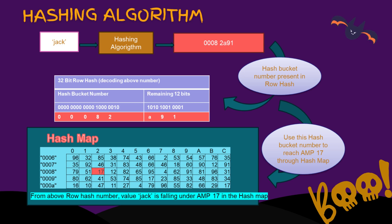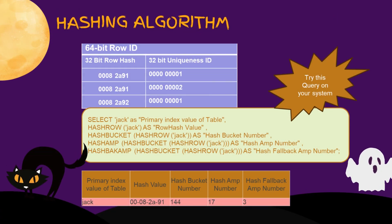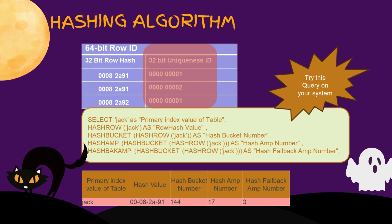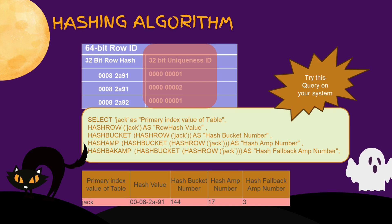Each AMP will further add a 32-bit Uniqueness ID to uniquely identify a row and differentiate it from other rows hashed with the same value. Now we know how the primary index value Jack traveled from the client system through different modules and reached the final storage layer on AMP number 17. These hash maps and hash bucket numbers are generated based on the Teradata system configuration, which varies for each customer as AMP counts and node counts differ per their requirements.